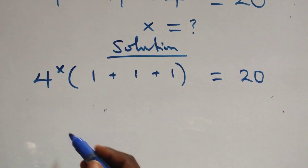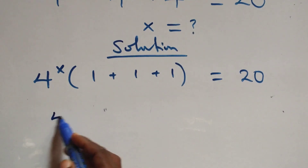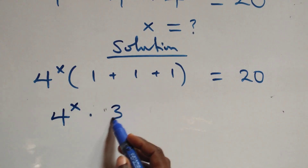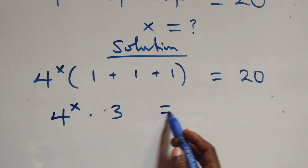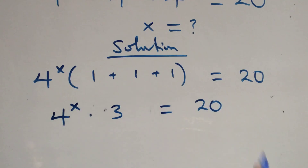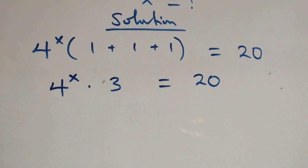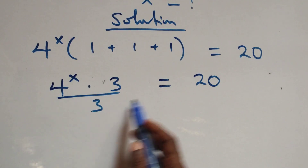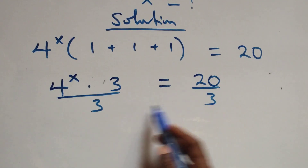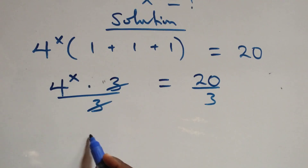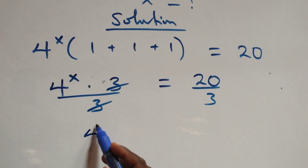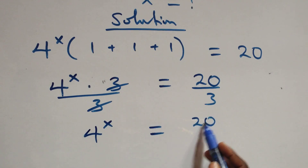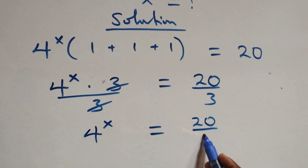From here we have 4 raised to power x times 1 plus 1 plus 1, that's 3, equals to 20. Then the next step is to divide both sides by 3. The 3s cancel each other, and we have 4 raised to power x equals to 20 over 3.